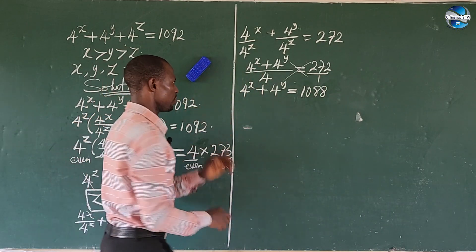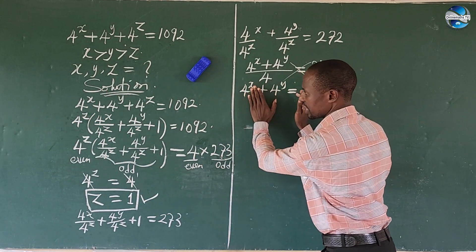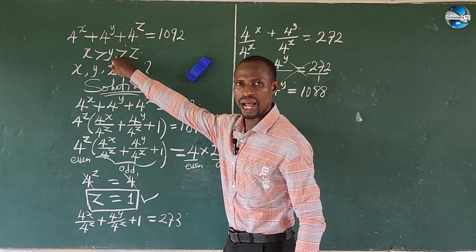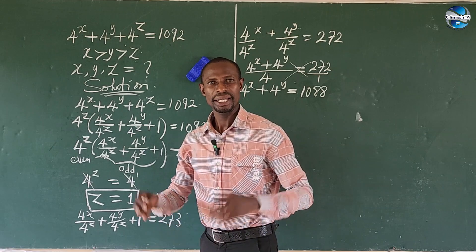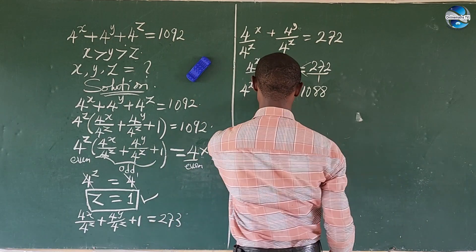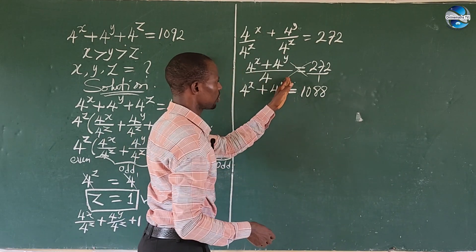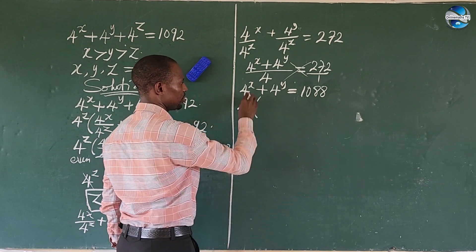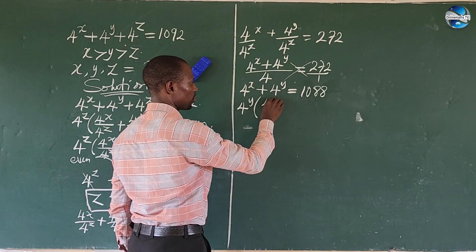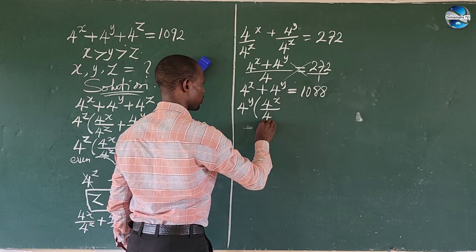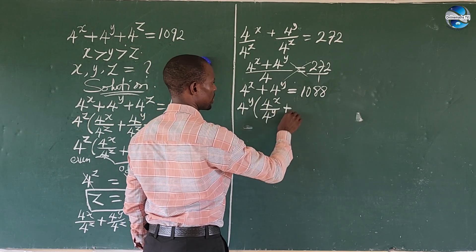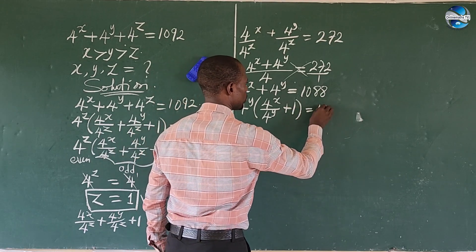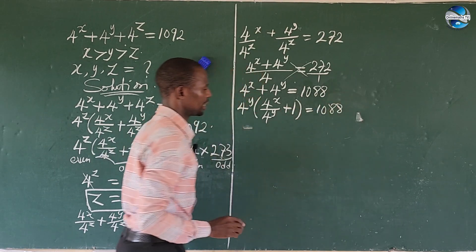Now again we go back to the condition: x is greater than y. So what do we factor out here? We factor out 4 to the power of y. This gives us 4 to the power of y times bracket 4 to the power of x all over 4 to the power of y, plus 1, close bracket, equals 1088. Again we try to factor this to bring out even and odd. Let's divide 1088 by 4.